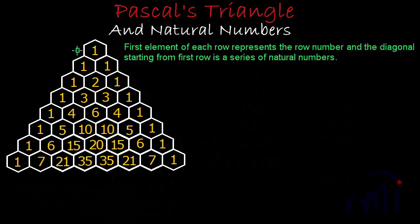The initial row we call it as row number 0, and this is called row number 1, this is called row number 2, and this is 3, 4, 5, 6, and row number 7.